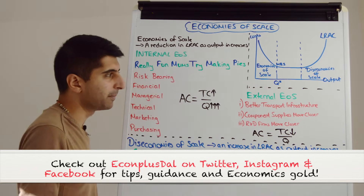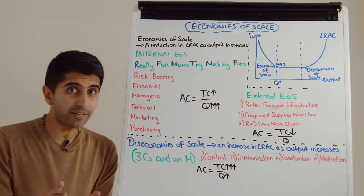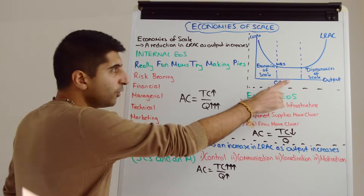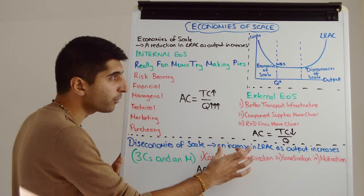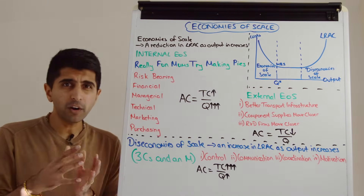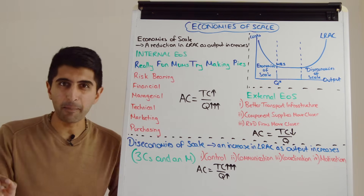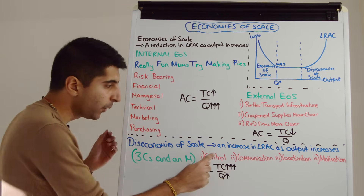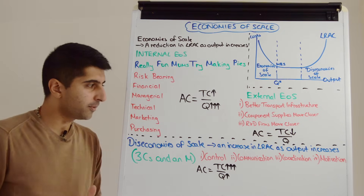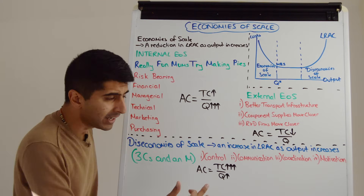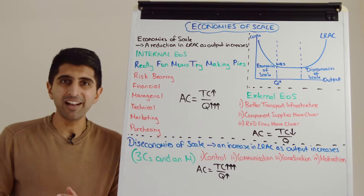Both internal and external economies of scale are benefits of growing in size, however there are problems if a business gets too big. If a business gets too big they can suffer diseconomies of scale — an increase in long-run average cost as output increases. There are four major diseconomies of scale: just remember three C's and an M. We have the problems of control, communication, coordination, and motivation. All of these will impact on productivity, meaning total costs will be rising faster than quantity, thus pushing up average cost.